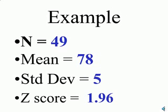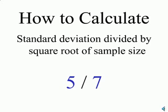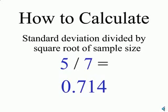An example: we have a sample size of 49, a mean of 78, a standard deviation of 5, and a z-score of 1.96 for a 95% confidence interval. We take the square root of our sample size — the square root of 49 is 7. We divide our standard deviation by the sample size: 5 divided by 7, and that yields 0.714.